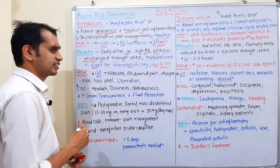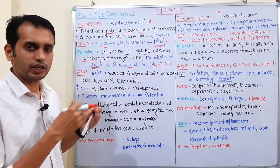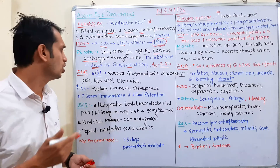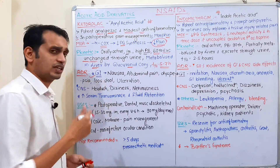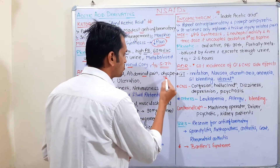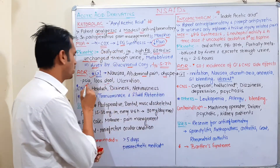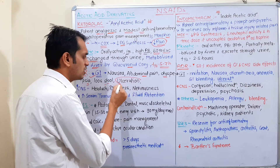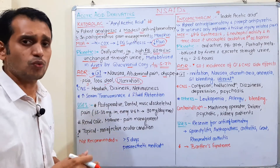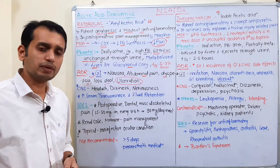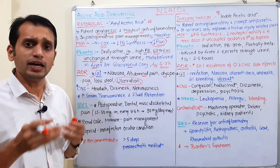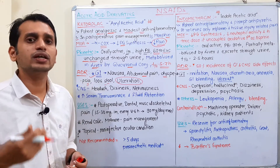Regarding adverse drug reactions and side effects of ketorolac: common GI side effects include GI irritation, nausea, vomiting, abdominal pain, dyspepsia, loose stool, and ulceration. Ulceration is a very important point — if NSAIDs are used long-term or chronically in high doses, ulcers can develop. Anti-ulcer drug activity is checked using aspirin-induced or indomethacin-induced ulcer models in animal studies.